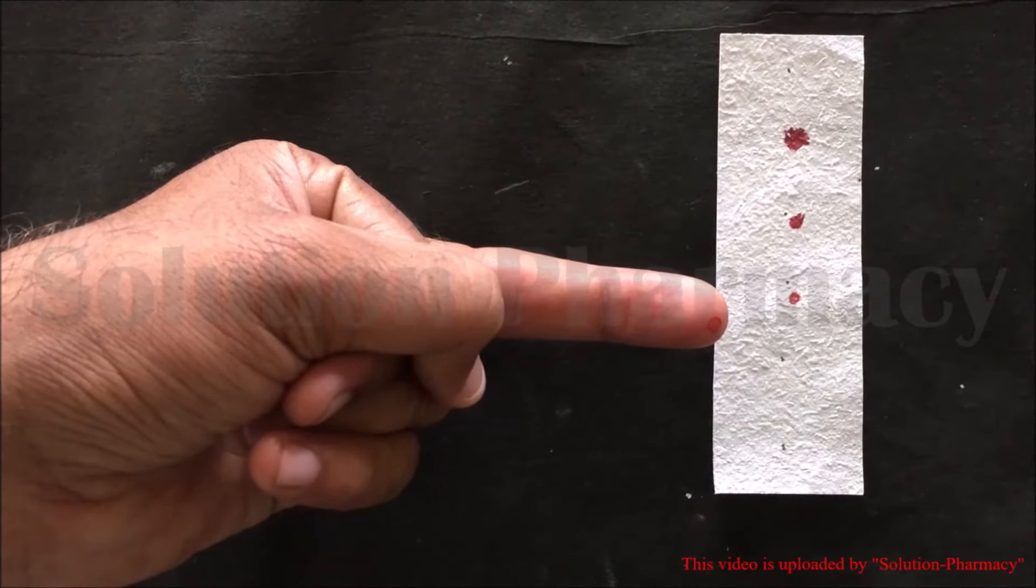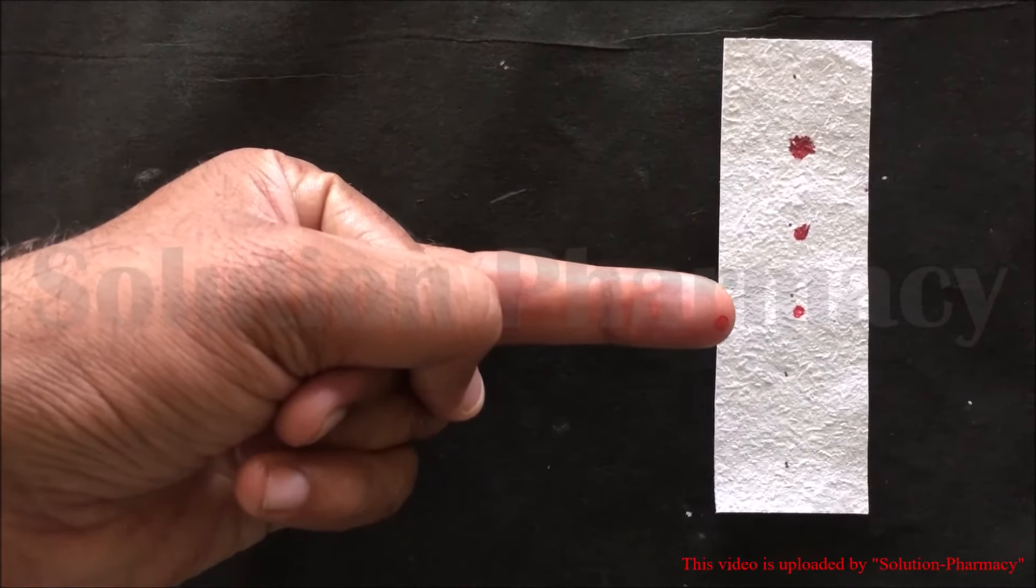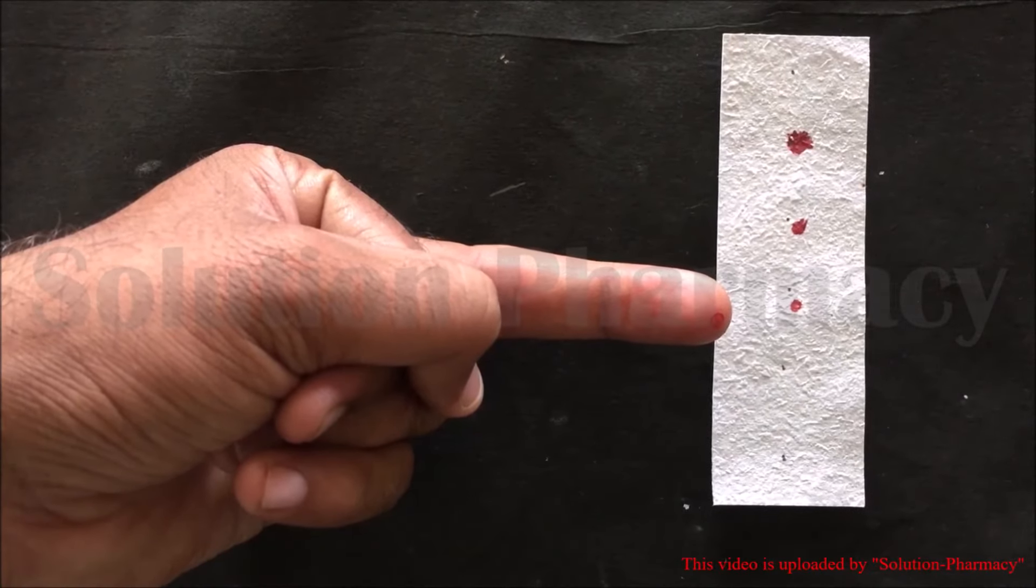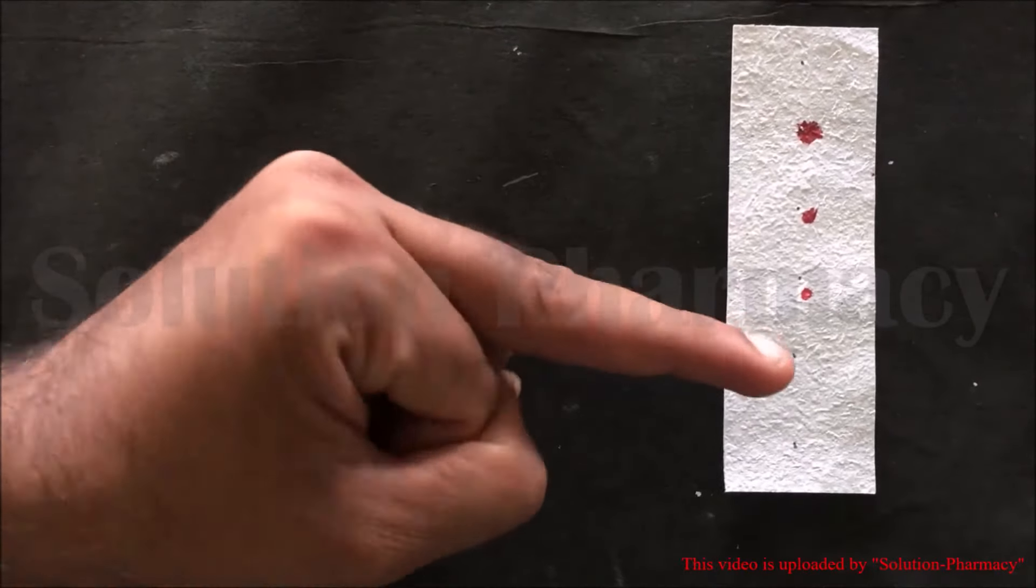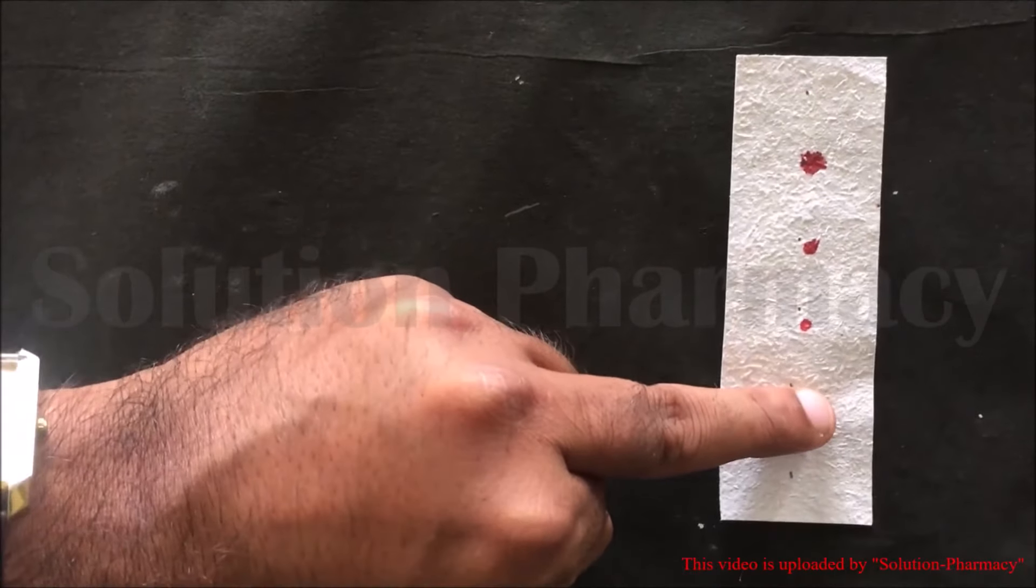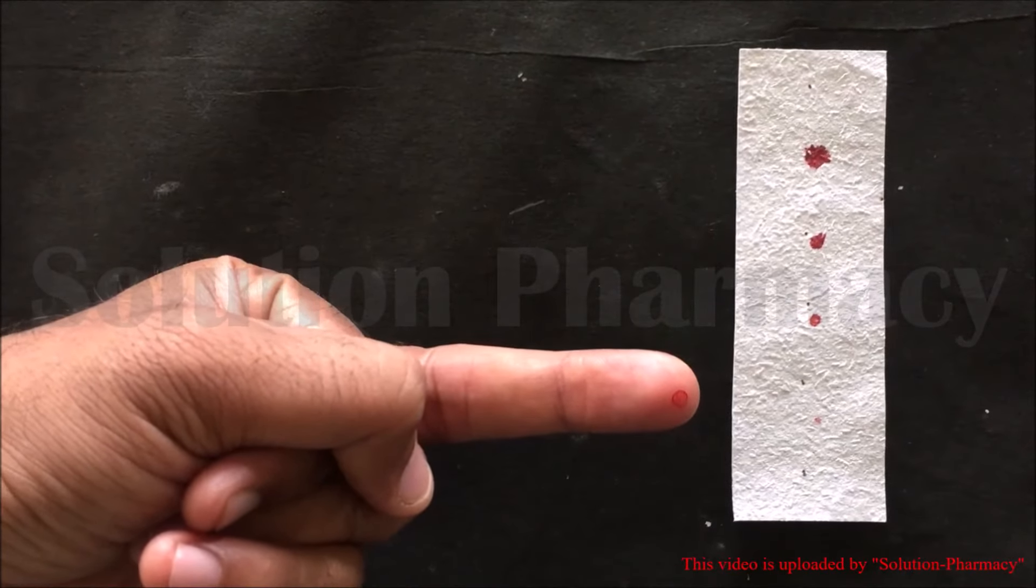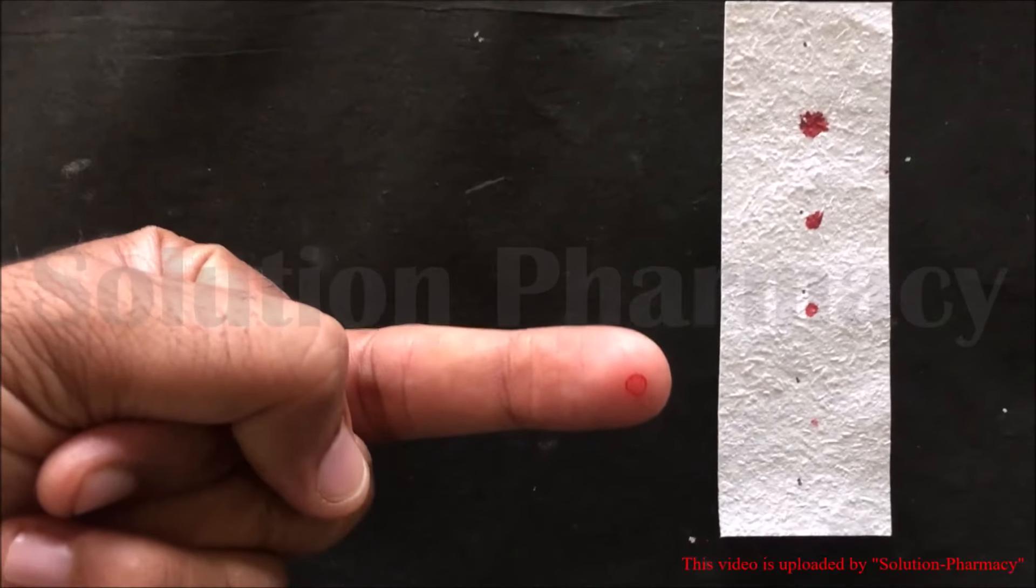Wait for 30 seconds and observe the filter paper after applying the fingertip where we pricked to see whether the filter paper stains with the blood or not. After 30 seconds, apply the fingertip over the filter paper. Here you can see a very minute spot appear on the filter paper.